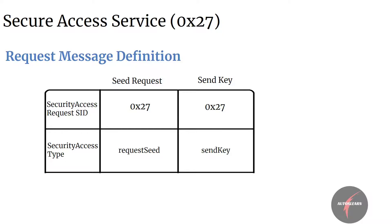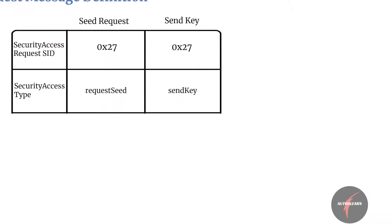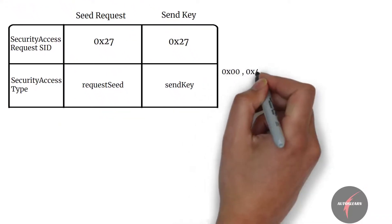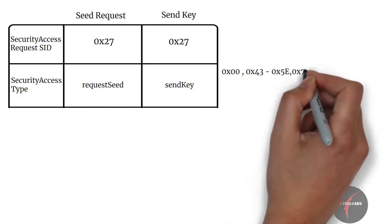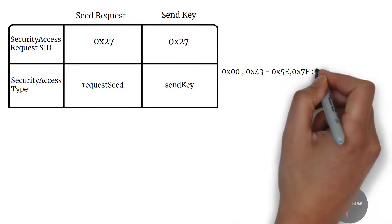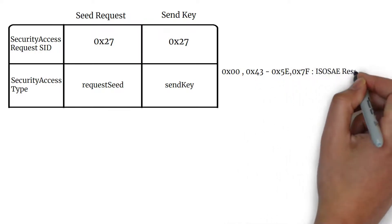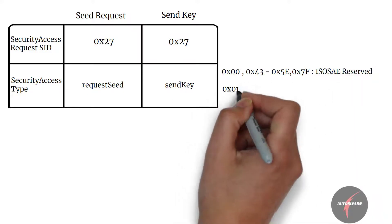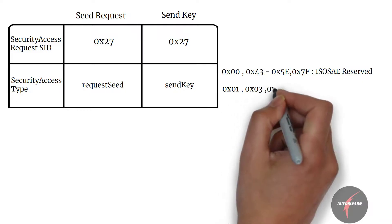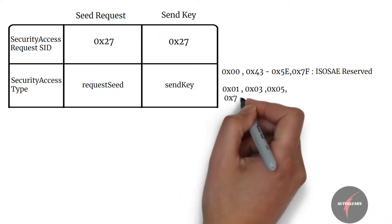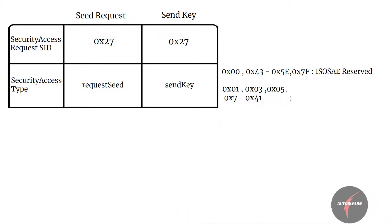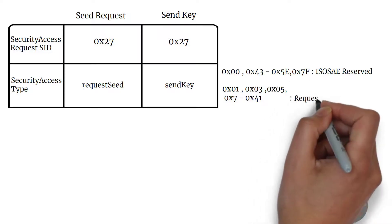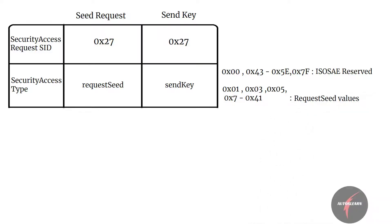Value 0, 43 to 5E, and 7F — these values are ISO SAE reserved for future use. Then values 1, 3, 5, and from 7 to 41 — these values are meant for request seed with different levels of security defined by the vehicle manufacturer.